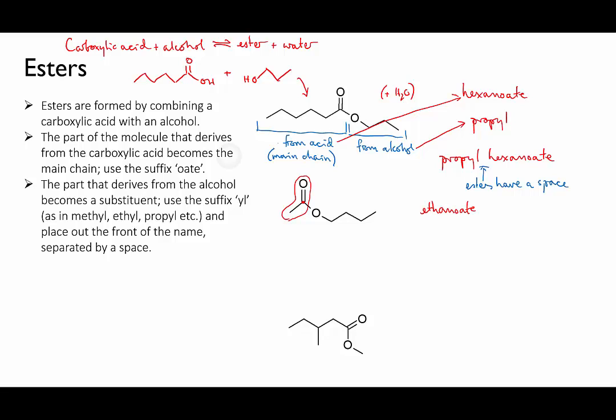Then the substituent part has four carbons, so it's butyl. And together, that makes butyl ethanoate.